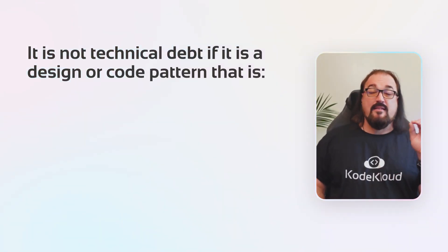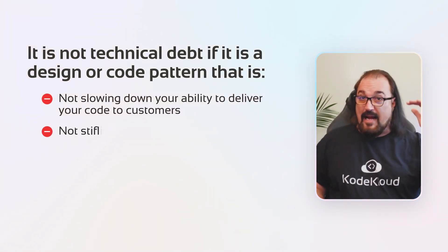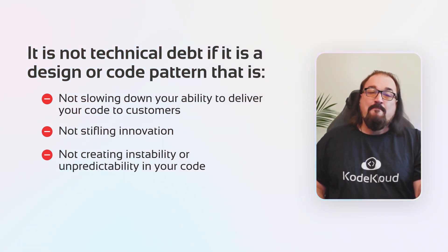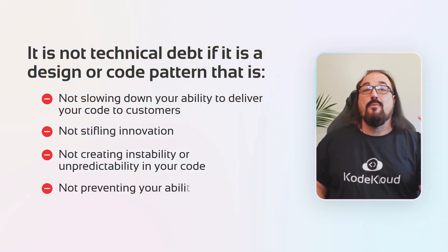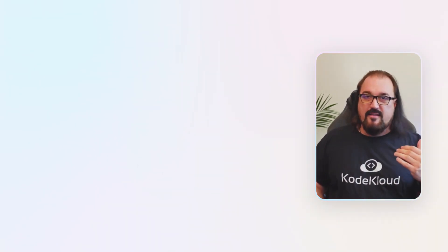Later on, you're not going to have to correct it because it's not inhibiting your ability to deliver. It's not slowing you down. It's not blocking any ability on your part to evolve. What this means is that it is not technical debt if it is a design or code pattern that is not slowing down your ability to deliver code, not stifling innovation, not creating instability in your code, and not preventing your ability to run the code in production.